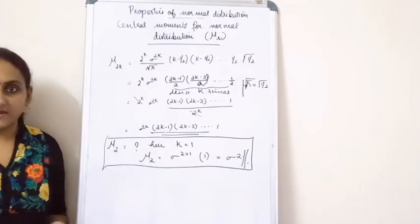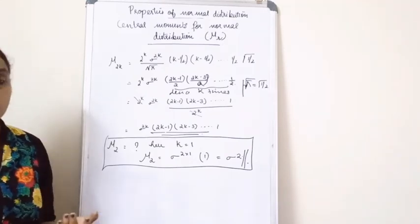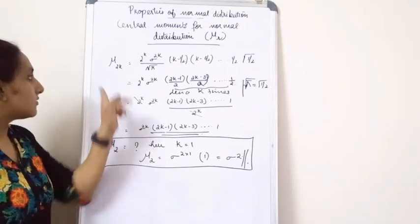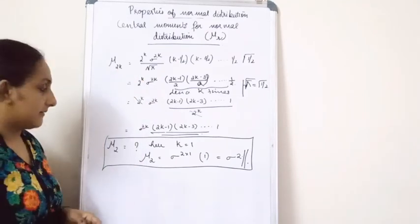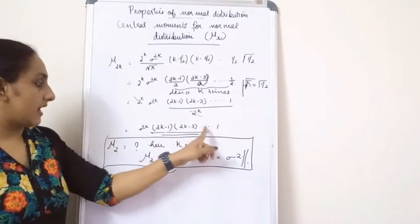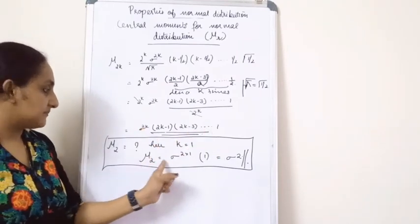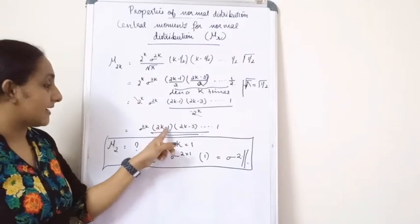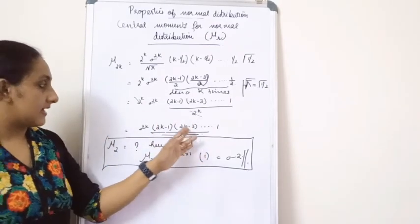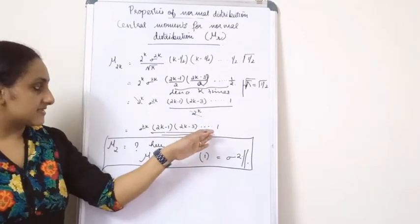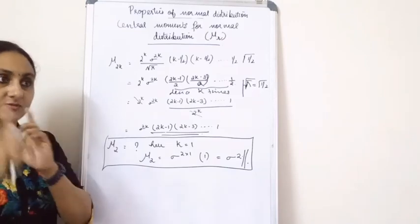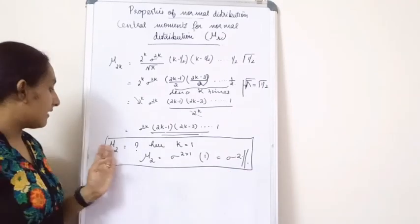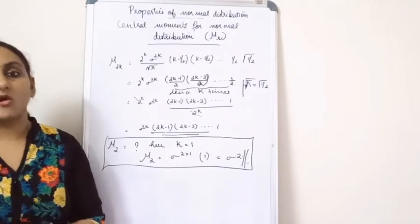If you are asked to find the variance, recall that variance is mu_2. Setting k equal to 1 in the formula: sigma raised to 2k with k equals 1 gives sigma squared, and 2k minus 1 with k equals 1 equals 1. So mu_2 equals sigma squared. That is how you find the variance of a normal distribution.